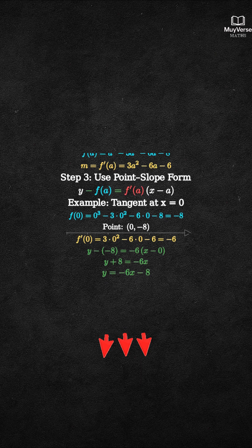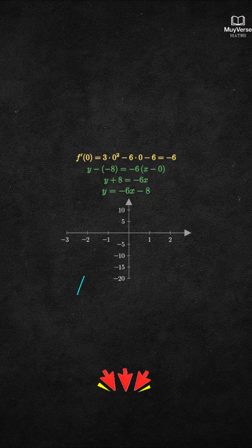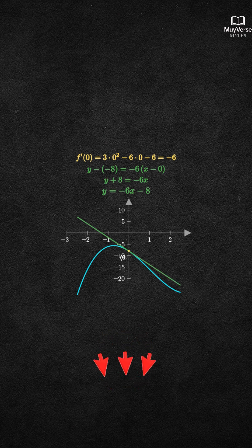Now, let's see it graphically. The cyan curve is f(x). The green line is the tangent at x equals 0. They touch at the point (0, negative 8), and the line matches the curve slope there.